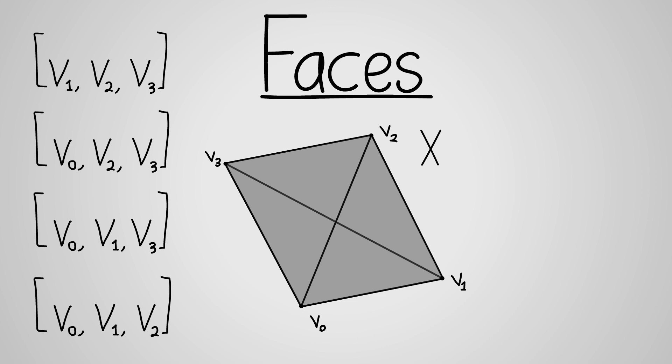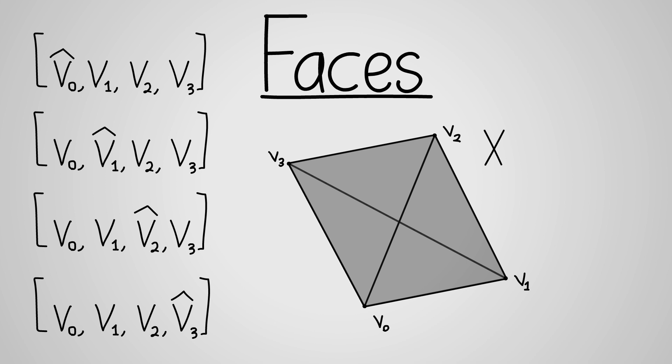When we use this square bracket notation to write the face of a simplex, we'll sometimes write in the omitted vertex, but with a little hat, to emphasize the removal of that vertex, which is harder to see when you just don't write it in.